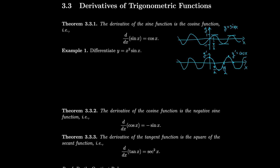Let's differentiate y equals x squared sine x. So dy/dx will have to be applied using the product rule, because we have x squared times sine x. That's x squared times the derivative of sine, plus sine times the derivative of x squared. So that's x squared times cosine x, plus 2x times sine x.